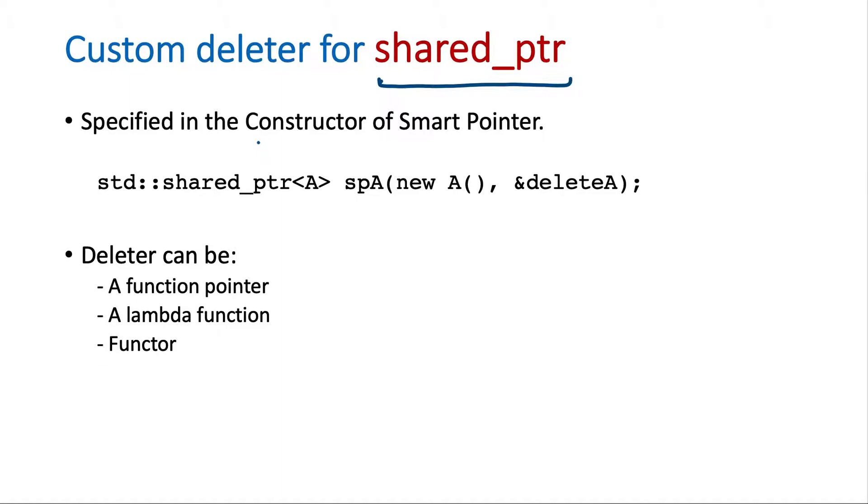So here we have to provide the deleter in the constructor itself. So you can see that this part is new. Earlier we were not providing this. So when we don't provide this our own deleter, then it will use the default deleter. That is it will call the delete on this underlying pointer. So here we have provided our own deleter. So this will be called when reclaiming the resources.